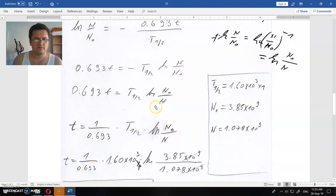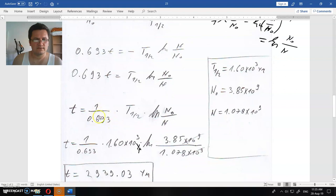Now to find t, we just divide everything by this number. We have this number, 0.693, and we have the number of years of the half-life, and we have the number that we started with, and we have what we have now. When you find ln of 3.85 divided by 1.078, you will get some number, and you multiply all of this, and you will get 2,939 years.